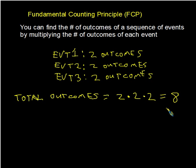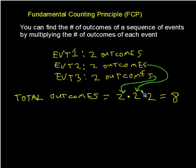You'll notice this is the same answer we got by drawing the tree. However, if we had to flip 30 coins, this would be a way more efficient approach. Just to be clear where these numbers came from: the number of outcomes for event three is two, for event two is two, and for event one is two. So we multiply together the number of outcomes of each event to get the total number of outcomes for all events occurring in a sequence.